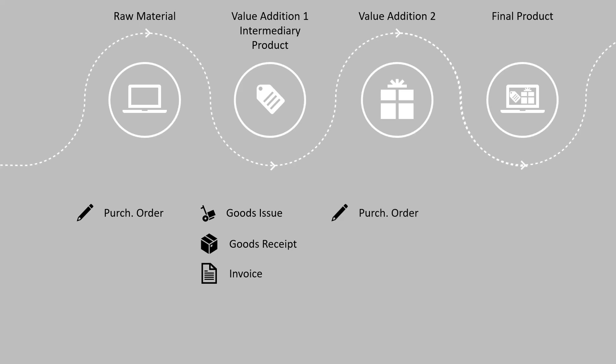For the second subcontracting vendor, we again create a purchase order with the material as the final product and the vendor as the second subcontracting vendor. We do not do any goods issue here because at the time of posting the goods receipt for the first purchase order, the goods are already transferred from the first vendor to the second subcontracting vendor. Once the value addition is done and we receive the final product, we post the goods receipt and the invoice receipt. From an accounting standpoint, the entries look similar to the normal subcontracting process, just that we have two different goods receipts and two different invoices — so there are four documents posted in total for this multi-level subcontracting with two subcontracting vendors.